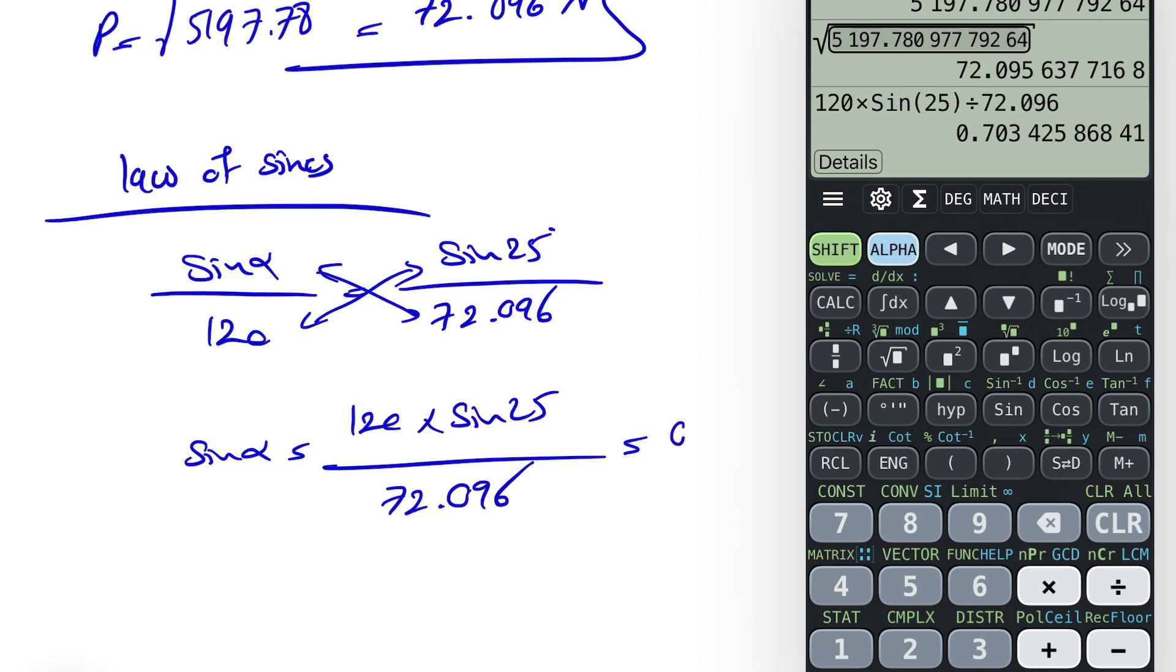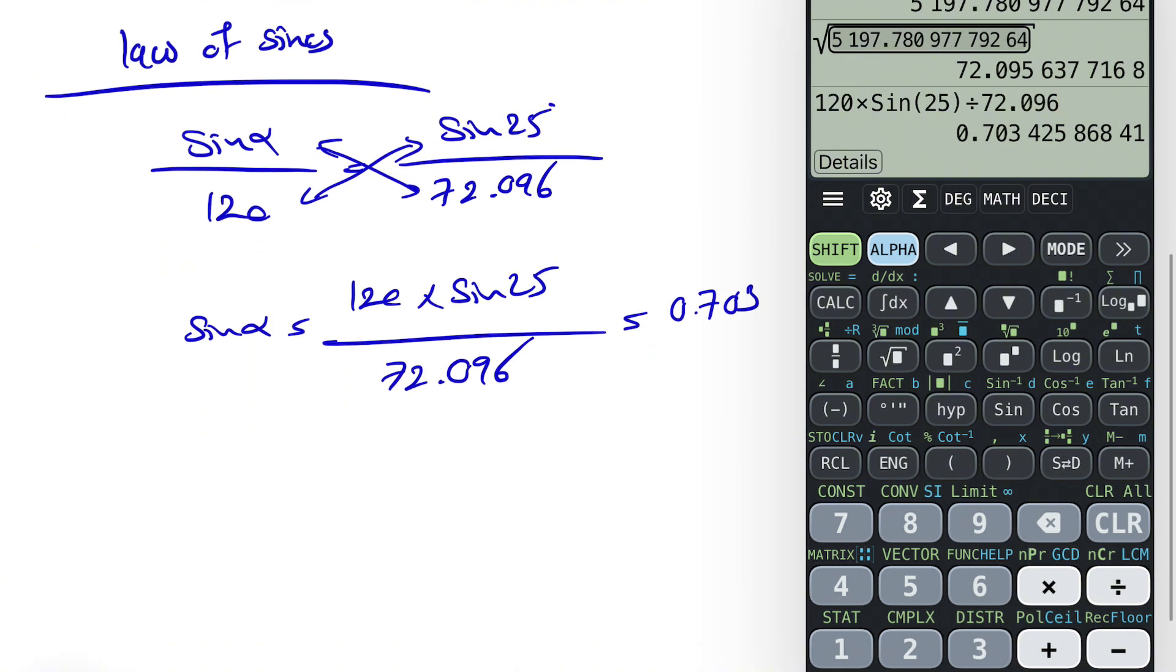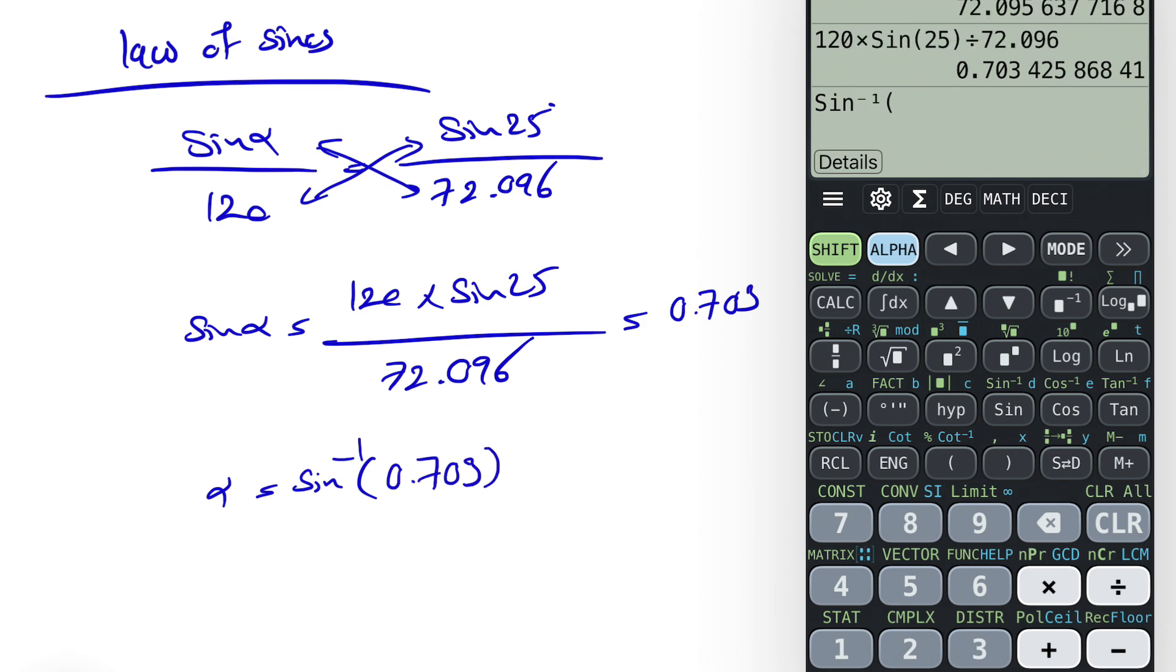120 times sine of 25 divided by 72.096. That's going to be 0.703. So our alpha would be sine inverse of 0.703, which is going to give us 44.703 degrees.